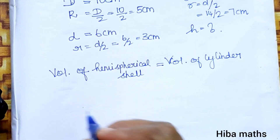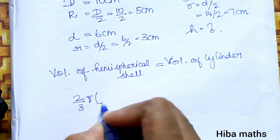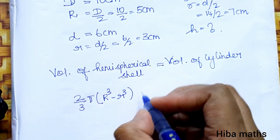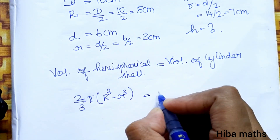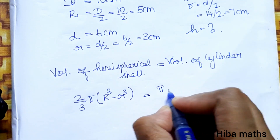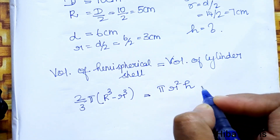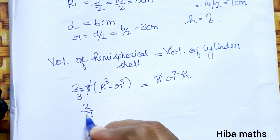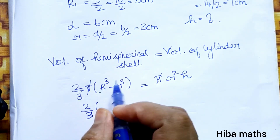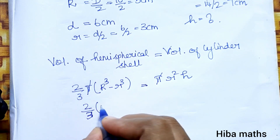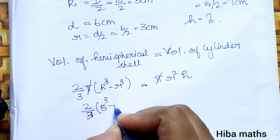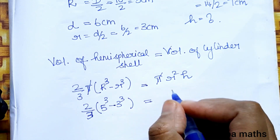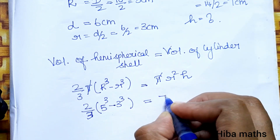The volume of the hemispherical shell is 2/3 × π × (R³ − r³), that is capital R cube minus small r cube, equal to the volume of the cylinder, which is π × r² × h. The pi cancels on both sides. With R = 5 and r = 3, and the cylinder radius = 7.